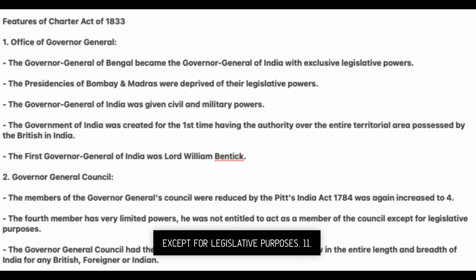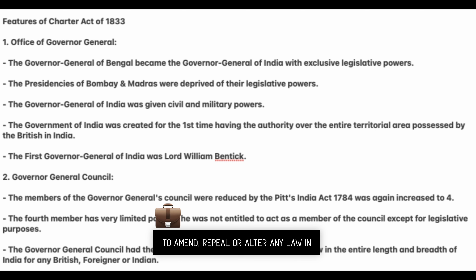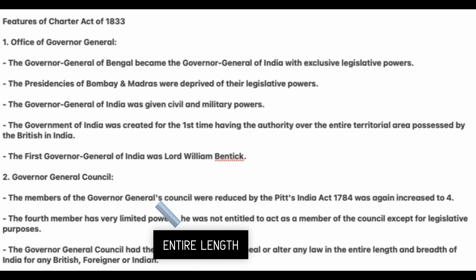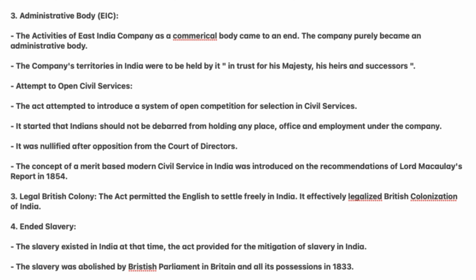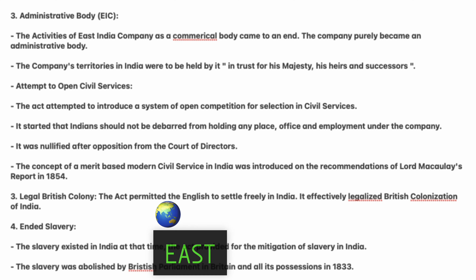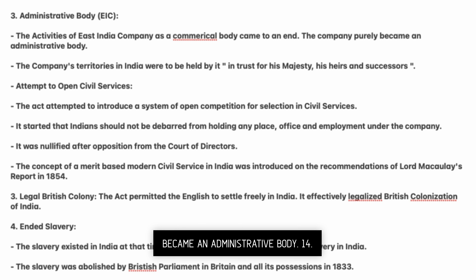The fourth member was not entitled to act as a member of the council except for legislative purposes. The Governor General's Council had the authority to amend, repeal, or alter any law in the entire length and breadth of India for any British, foreign, or Indian administrative body. The activities of the East India Company as a commercial body came to an end; the company purely became an administrative body.